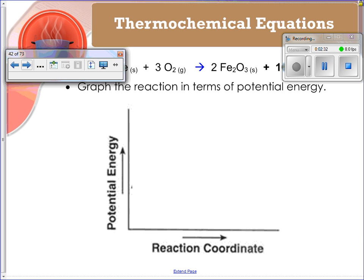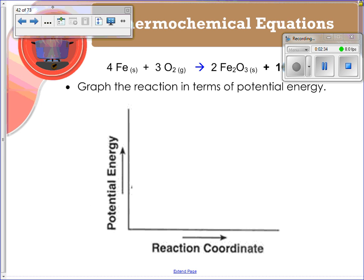We were going to graph that reaction that we just dealt with in terms of potential energy. Remember, we talked about energy in video one. This is an exothermic reaction. So I'm going to draw it like this. This is what we start with. We've got our iron and we've got our oxygen. And this is what we're ending with. We've got our Fe3O solid over here.